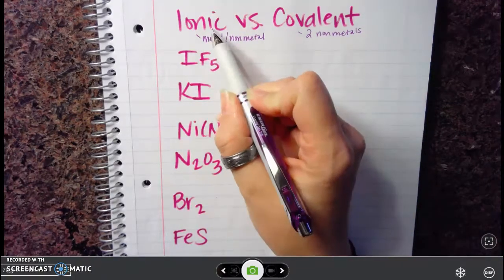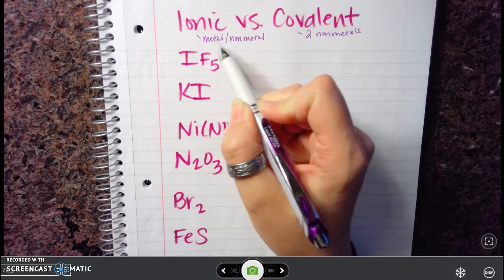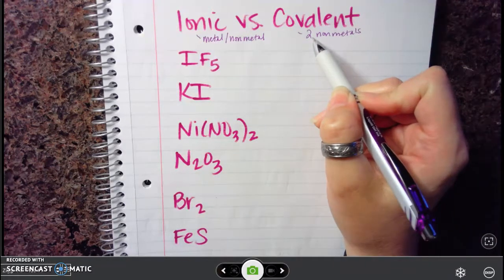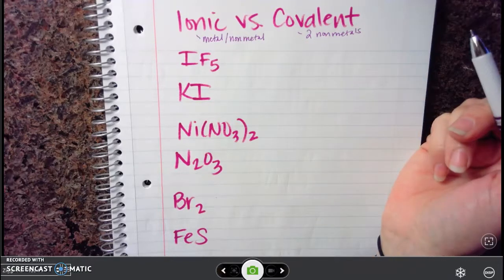Because if it's a metal, it's going to be an ionic bond. If you have a non-metal first, it's covalent because these are made up of two or more non-metals.